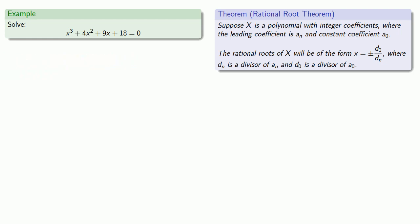The divisors of 18 are 1, 2, 3, 6, 9, and 18. The only divisor of 1 is 1. So the rational roots, if they exist, have to be among plus or minus 1, 2, 3, 6, 9, or 18.